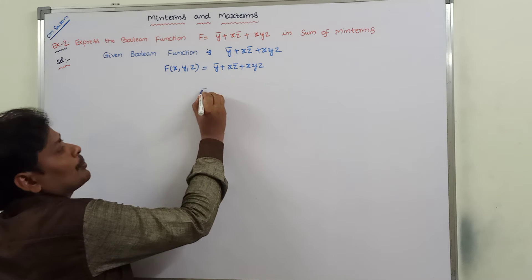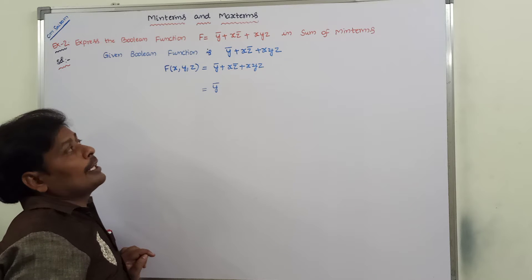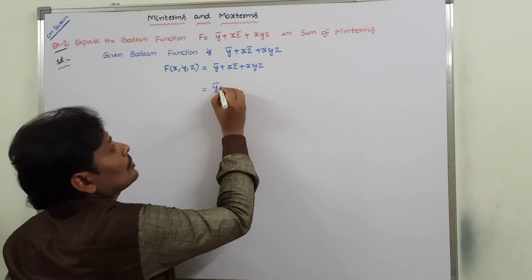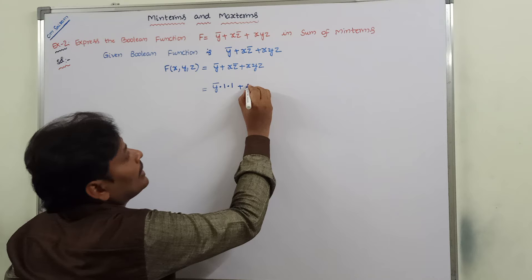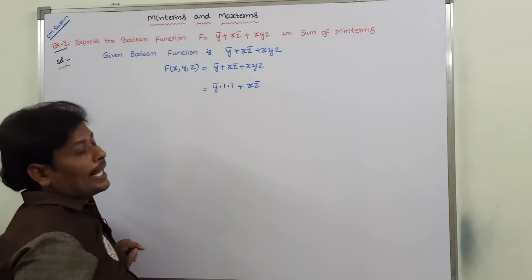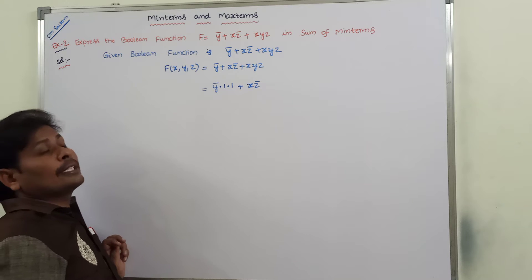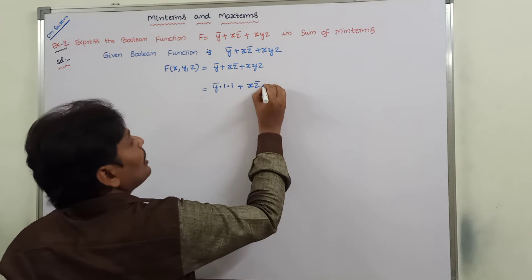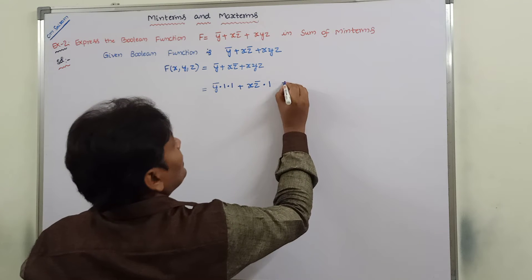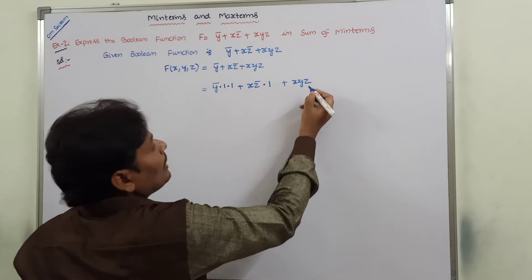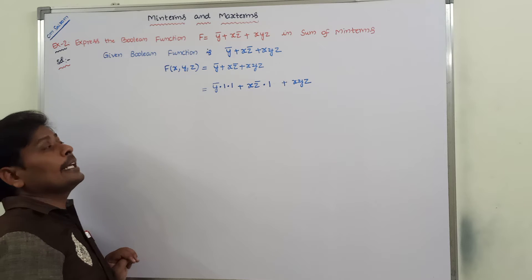Consider the first product term, ȳ. Here, two variables are missing — x and z — so ȳ can be multiplied with two ones. In the second product term, xz̄, that term is multiplied with only a single one because only variable y is missing. In the third product term, there are no variables missing; all three variables are present.